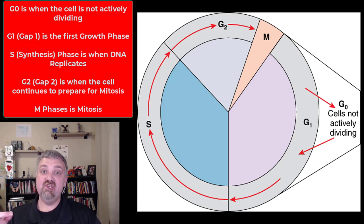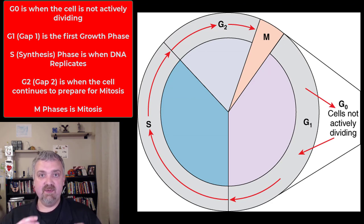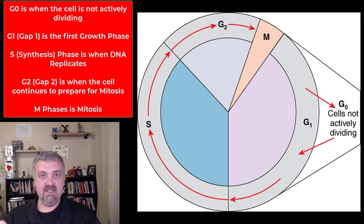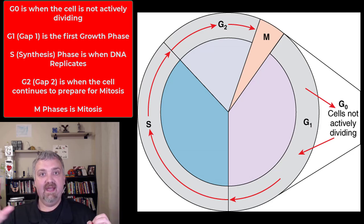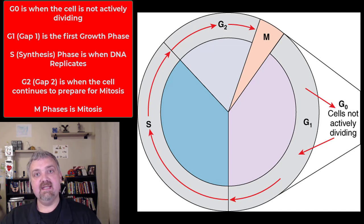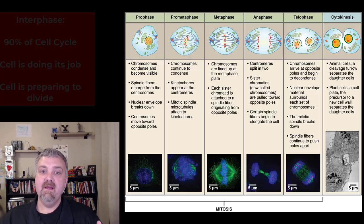Then we go into G2, or the second gap phase. This is going to be where the cell continues to prepare for mitosis. The M phase is mitosis — prophase, metaphase, anaphase, telophase — and then cytokinesis. Now we have two cells, and they will enter the next phase and continue on the cell cycle, which is why it's called that.